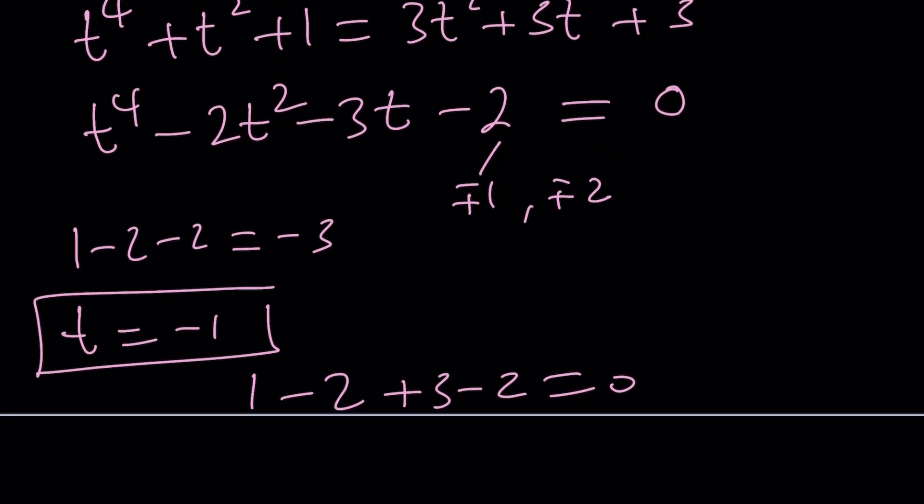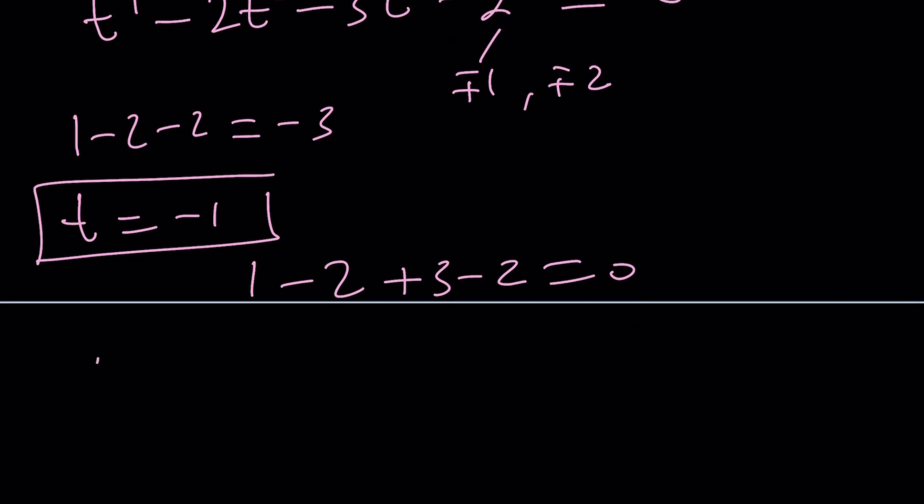So, t equals negative 1 allows us to reduce the power. Let's go ahead and write this equation as follows. I want to write it as plus t cubed so that as you can see t cubed times t plus 1 t plus 1 is a factor because if t is negative 1 t plus 1 is one of the factors because t plus 1 is going to be 0. Make sense?